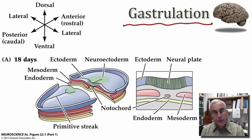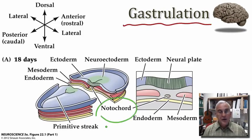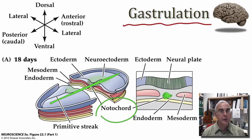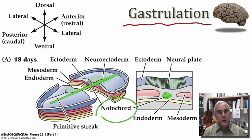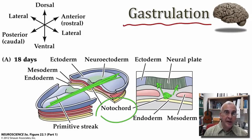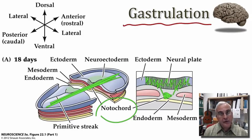One very important structure formed at this stage of development is called the notochord. The notochord is a long rod-like structure derived from mesoderm. If we make a cross-section through this developing embryo, we see the notochord here in this central location, cut in cross-section. The notochord is responsible for sending out chemical signals that interact with the ectoderm overlying this rod-like structure that runs along the length of the embryo. These chemical signals induce a change in the fate of the overlying ectoderm.